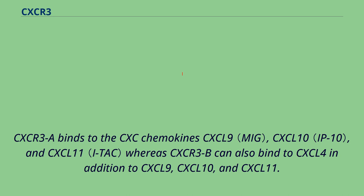CXCR3A binds to the CXC chemokines CXCL9, CXCL10, and CXCL11, whereas CXCR3B can also bind to CXCL4 in addition to CXCL9, CXCL10, and CXCL11.